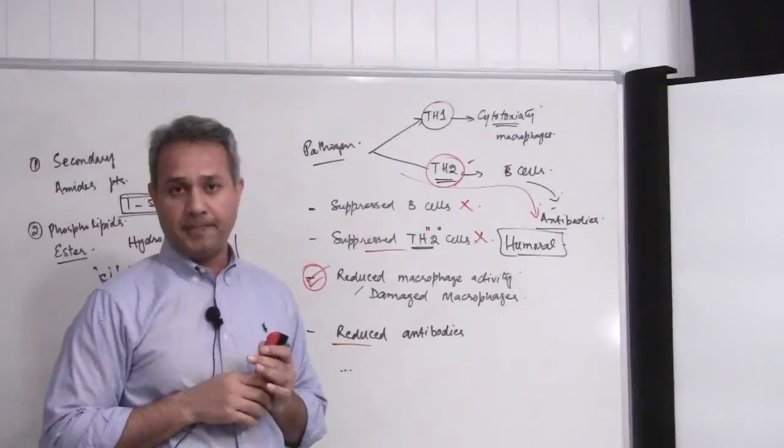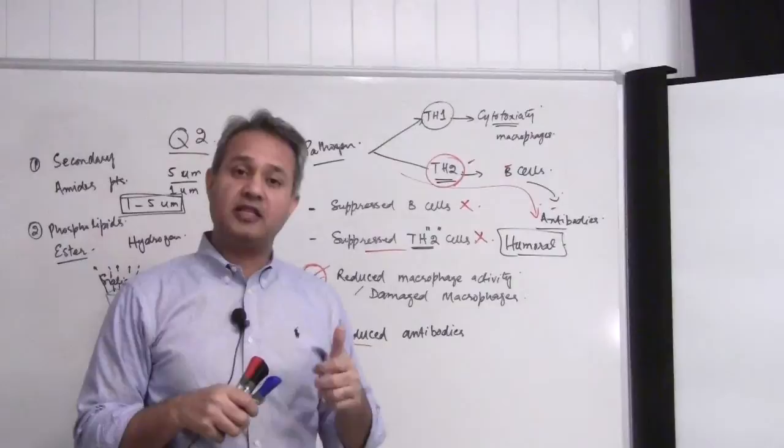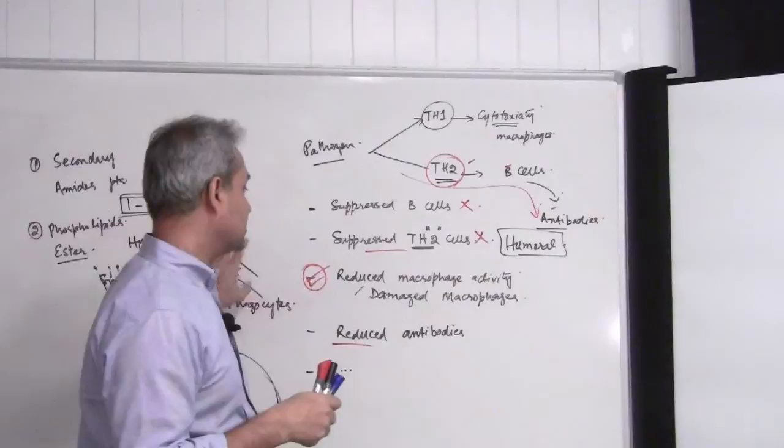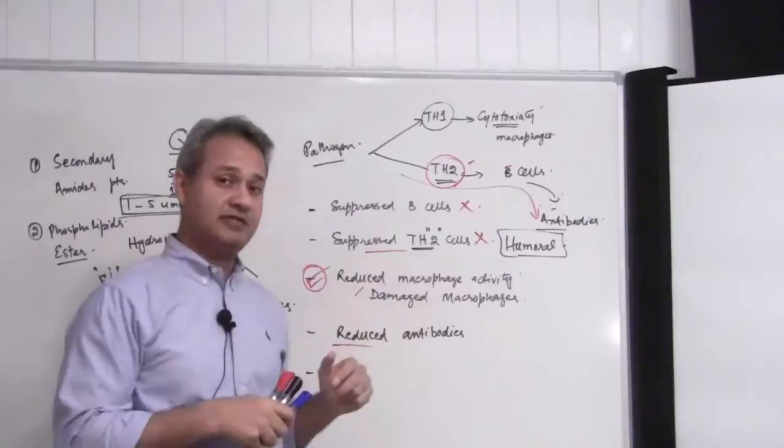In summary, the reason patients with silicosis are more susceptible to tuberculosis is that silica crystals cause damage to phagocytes, which downregulates macrophage activity and in turn increases susceptibility to Mycobacterium tuberculosis. Thank you very much and we will continue.